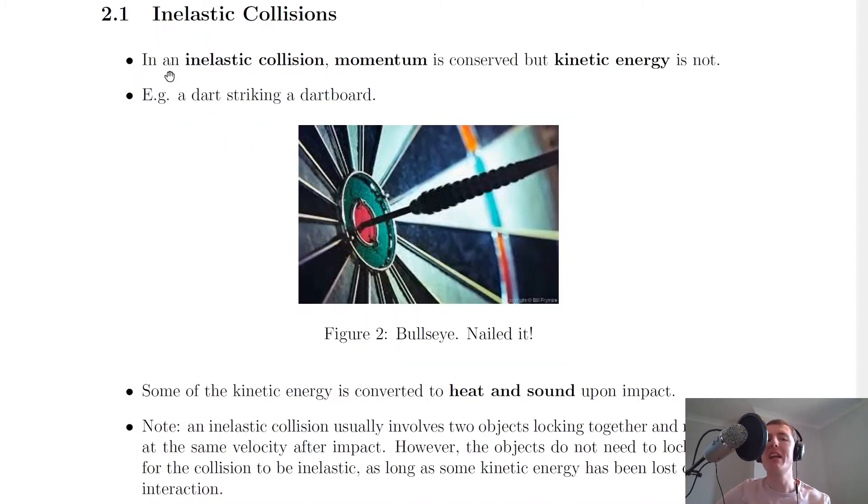An example of an inelastic collision is a dart striking a dartboard. If you imagine throwing a dart at a dartboard, the dart is going to be moving and it's going to hit the stationary dartboard. Momentum is going to be conserved before and after the interaction, but some kinetic energy in the interaction is going to be lost. The dart will have lots of kinetic energy to begin with when it's moving towards the dartboard, but because the dartboard is stationary, all of the kinetic energy will be transferred to the dartboard. But if it's fixed against a wall, then it's not going to move.